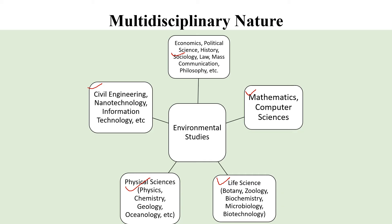Life sciences like botany, zoology, biochemistry, and microbiology are a very important part of environment, because this is how we get to know more about organisms, the natural world, and its interaction with the non-living world. Physical sciences like physics, chemistry, geology, and oceanology also help us study the various systems of the environment better.